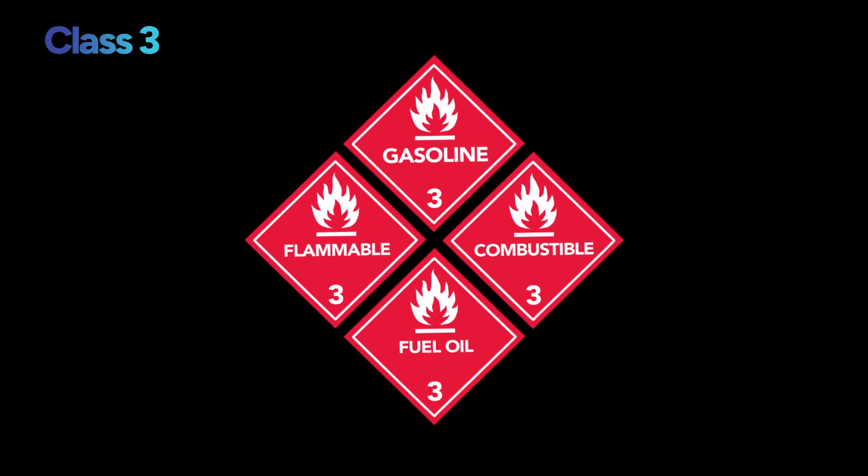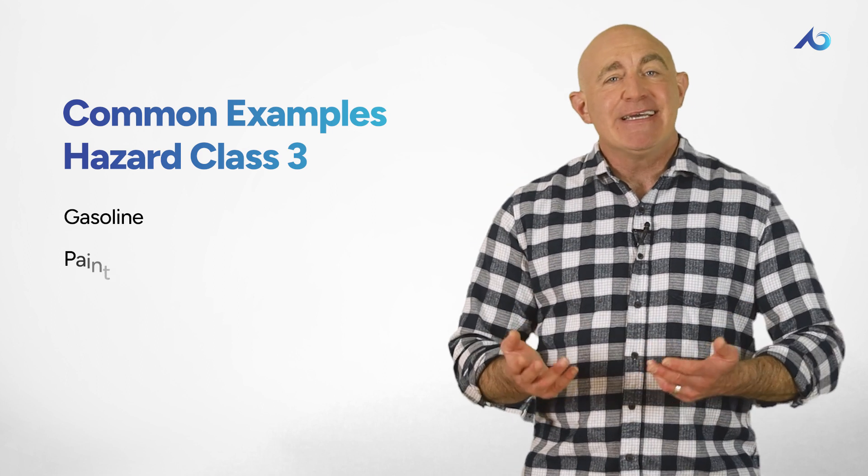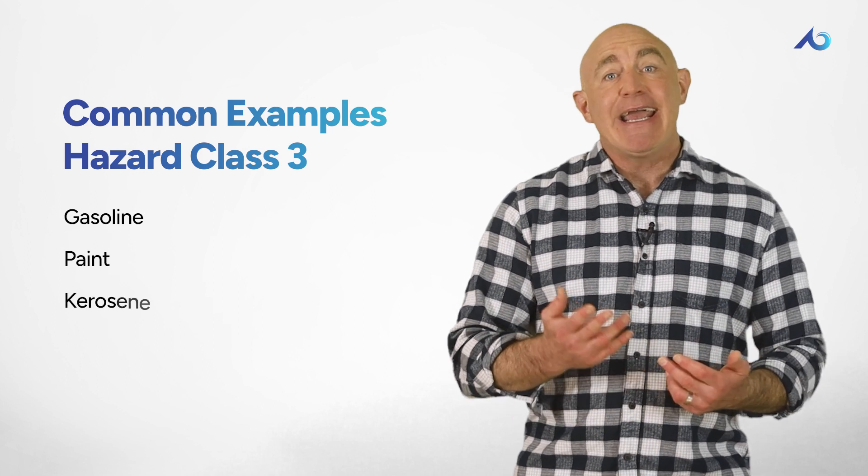Class 3 includes materials with a flash point no greater than 141 degrees Fahrenheit, and combustible liquids — substances with a flash point between 141 and 200 degrees Fahrenheit. OSHA defines a flash point as the maximum temperature where a liquid gives off a vapor that could form an ignitable mixture with air. Some common examples of hazard class three include gasoline, paint, kerosene, and diesel fuel.